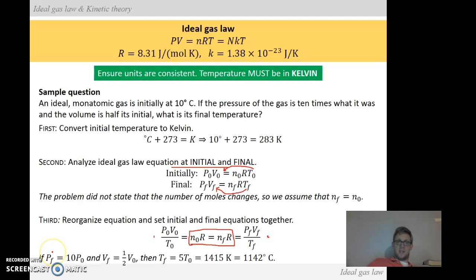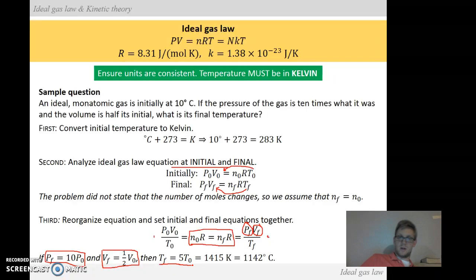Then we're also given that if the final pressure is 10 times the initial pressure, then we have this portion of the equation. And if the final volume is half the initial volume, then what happens? So this we can then replace into our PF. And the final we can replace into here. We can then rearrange all the equations and we end up with things, the P nots and the V nots cancelling. And we end up with the T final is equal to five times the initial temperature. The initial temperature is 283. So that is what gives us the 1415 Kelvin for the final answer.